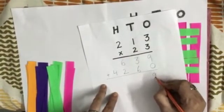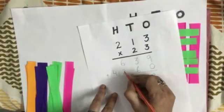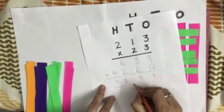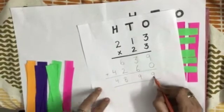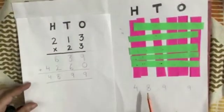9 plus 0 is 9. 6 plus 3 is 9. 6 plus 2 is 8. And 4. Our answer is 4899. It is also here 4899.